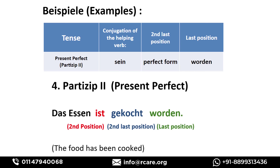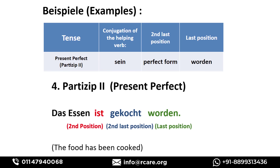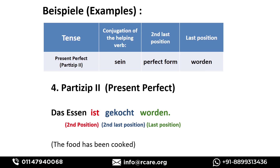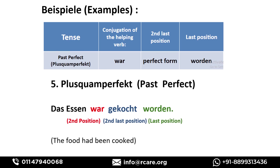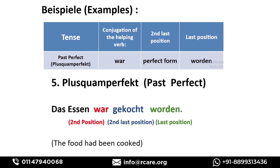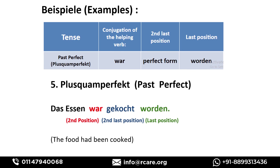Present perfect: 'Das Essen ist gekocht worden' — 'The food has been cooked.' The conjugation of 'sein' is at the second position, 'worden' is at the last position in perfect form, and 'gekocht' is at the second-last position. Past perfect: 'Das Essen war gekocht worden' — 'The food had been cooked.' Here 'war' is at the second position, 'worden' at the last position, and 'gekocht' at the second-last position.